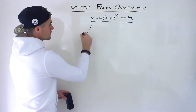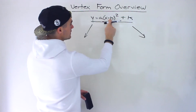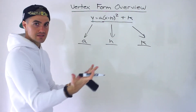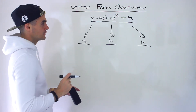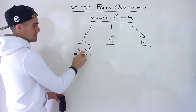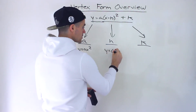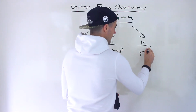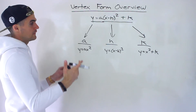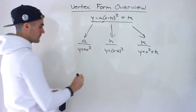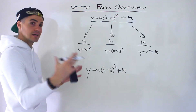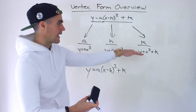In the previous section we talked about all of the transformation values separately — the a value, the h value, and the k value — and what each of them means, the different kinds of cases that can come up for each. We dealt with them mostly separately. Now in this section we're going to be combining all of these transformations simultaneously at the same time, versus just looking at them individually.